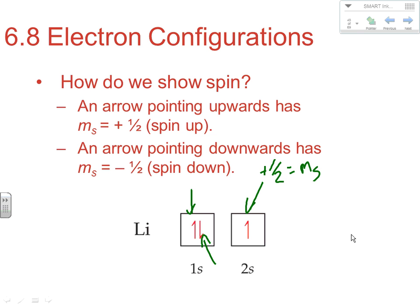Since it's on the second energy level, it would have n equals 2. It's in an s, so it would have l equal to zero. Its m-sub-l, which is orientation, well there's only one orientation for an s, so that's zero. And since it's the first one in, it would be m-sub-s of positive one-half. So this electron would be n=2, l=0, m-sub-l=0, m-sub-s=+1/2.